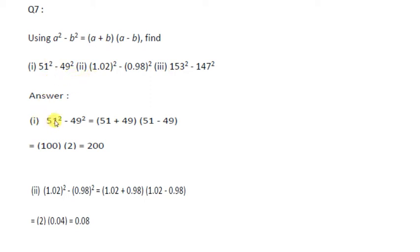The first one is 51² - 49². So here in place of A you have 51, in place of B you have 49. So replace A by 51 and B by 49 in the right hand side. You get 51 + 49 times 51 - 49. The sum is 100 and here it is 2, so it becomes 200.